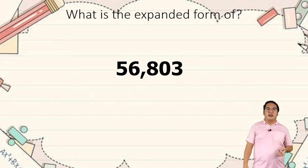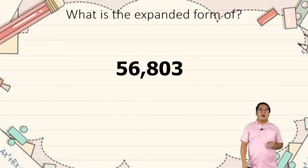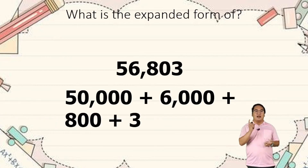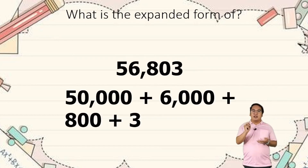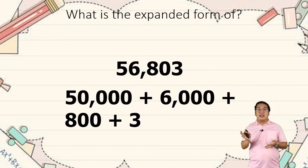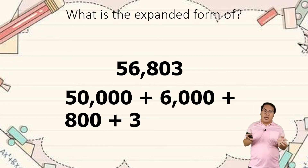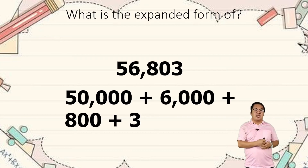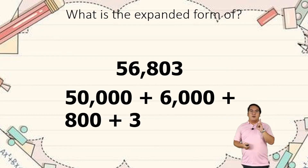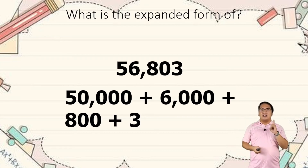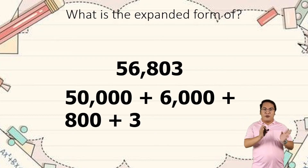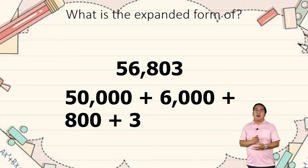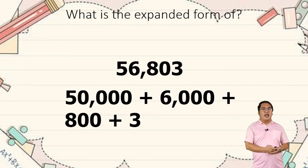How about the second one? Absolutely correct. We have 50,000 plus 6,000 plus 800 plus 3. If there is a zero in the tens place, we consider it as zero, so we're not going to add plus 10 or anything like that — it's just empty or zero. So we have the ten-thousands place as 50,000, then 6,000 plus 800 plus 3, giving us 56,803.